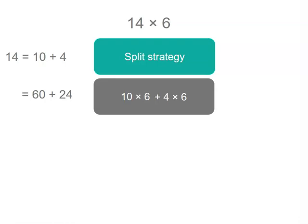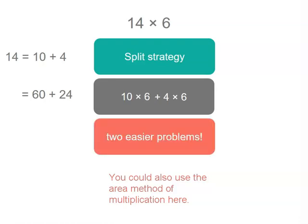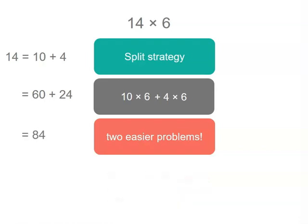So by remembering that 14 is 10 plus 4, we've got 10 groups of 6 and 4 groups of 6. So we've got two easier problems, and that makes 84.